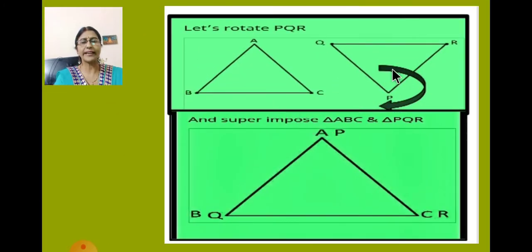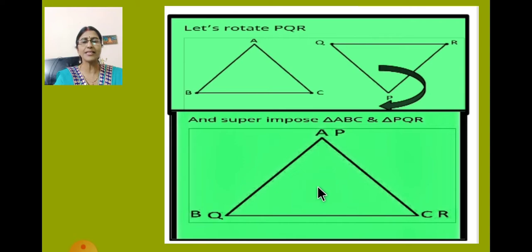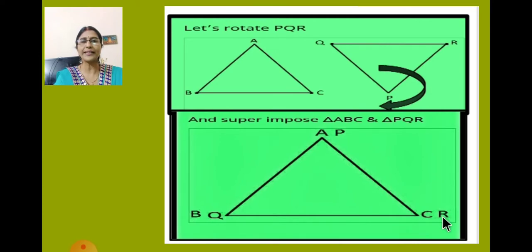Now let us rotate triangle PQR and superimpose triangle ABC and triangle PQR. You can see these two triangles are placed one over the other. You can see A and P — it is exactly lying here — so A is corresponding to P. Same with this point: B is corresponding to Q, and C is corresponding to R. So we can say these two triangles are congruent.